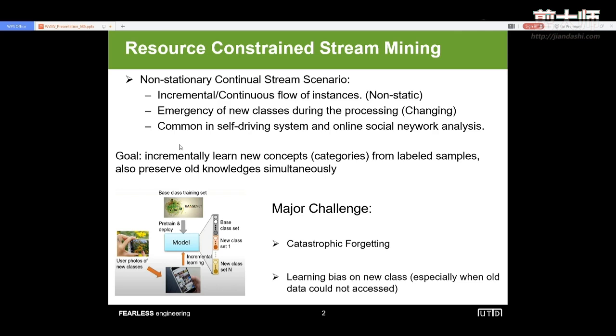The goal of such models is to incrementally learn new concepts or new categories from labeled samples and also preserve the old knowledge simultaneously. The major challenges of such models could be summarized as, first, the catastrophic forgetting on the old knowledge or the old data. The second one is the learning bias on new classes, especially when the model could not access the old data.